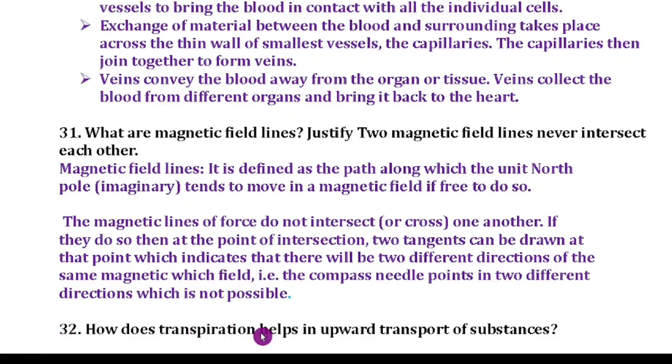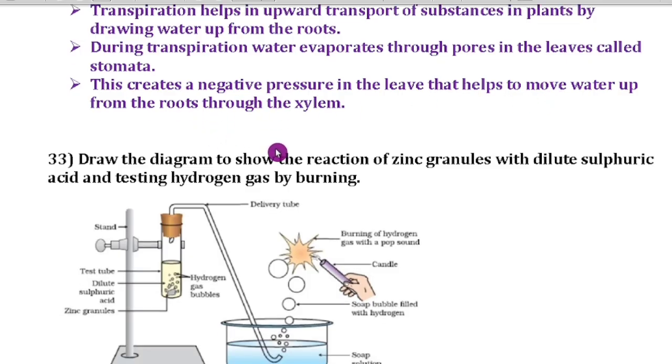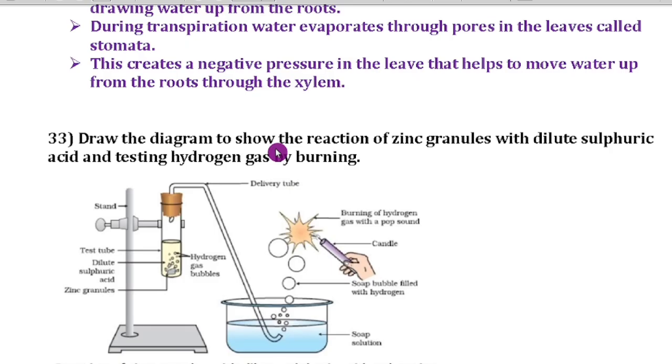Question number 32: How does transpiration help in upward transport of substances? Very important question. Transpiration helps in the upward transport of substances in plants by drawing water up from the roots. During transpiration, water evaporates through pores in the leaves called stomata. This creates a negative pressure in the leaves that helps to move water up from the roots through the xylem.